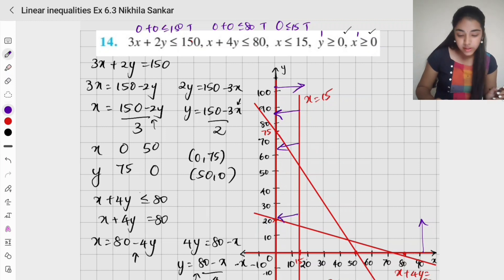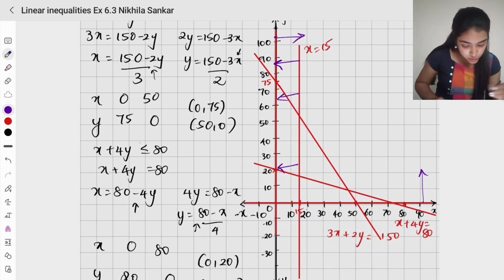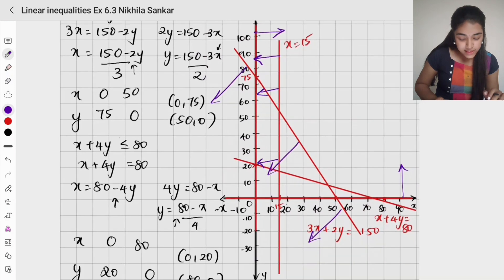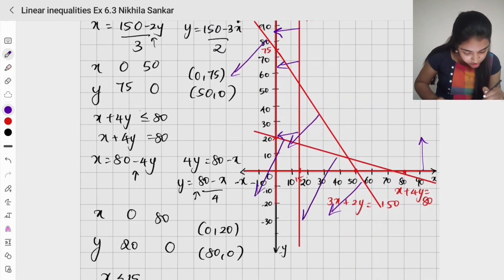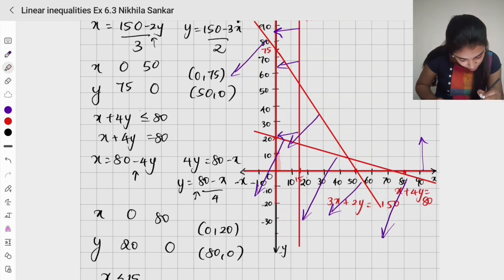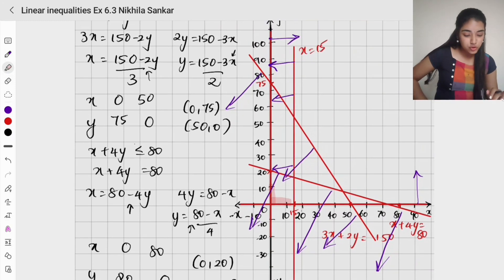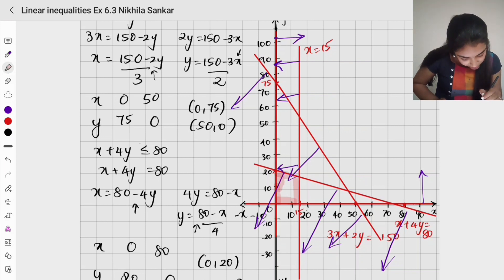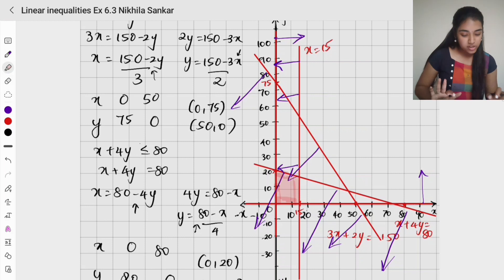On this side, x equals 50. For 3x plus 2y less than or equal to 150, the region is over here — this side is included. For x plus 4y less than or equal to 80, that is also included. But x greater than 0 and y greater than 0 mean we shade only the first quadrant. So the final shaded region is the common area satisfying all constraints.